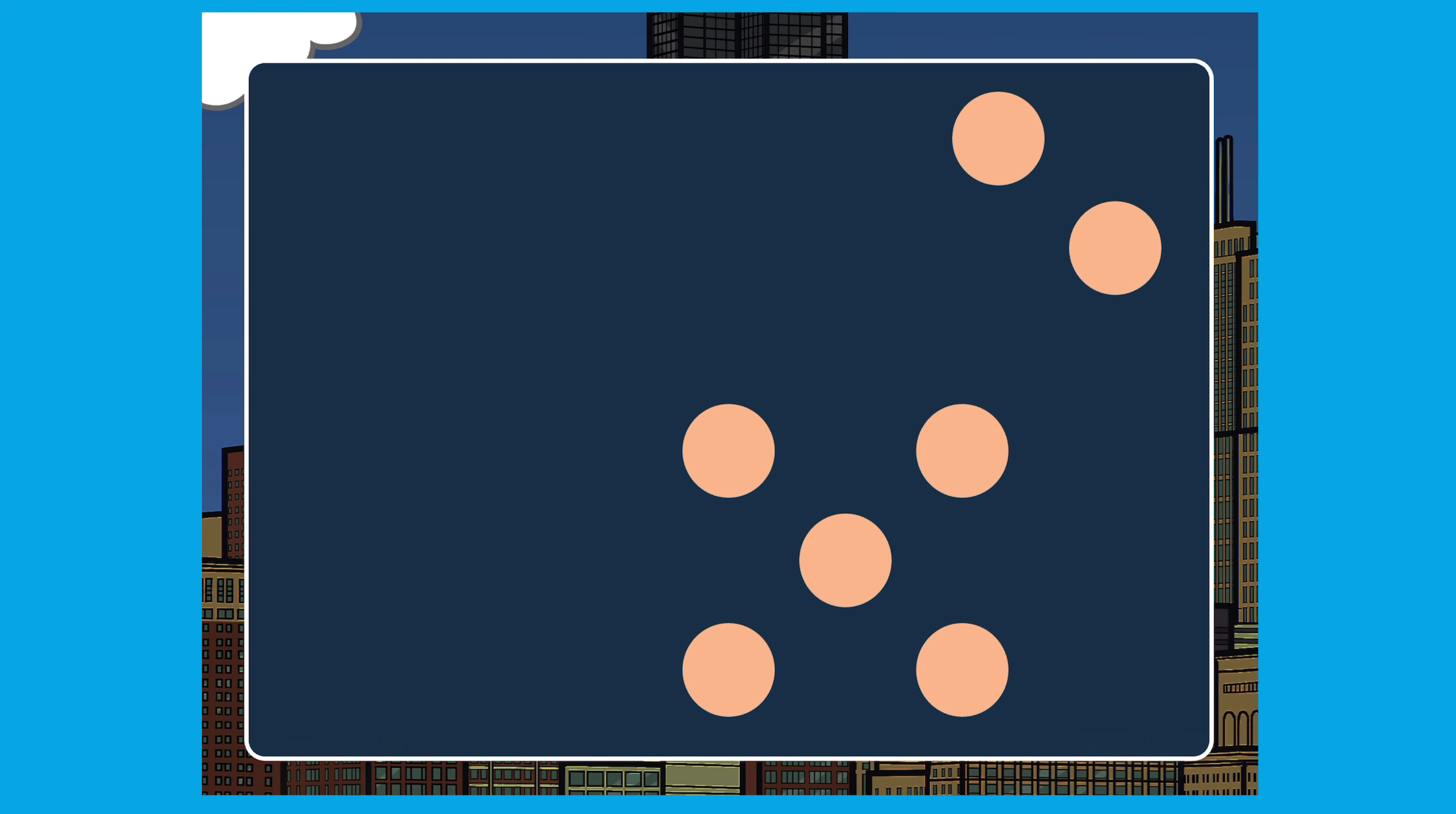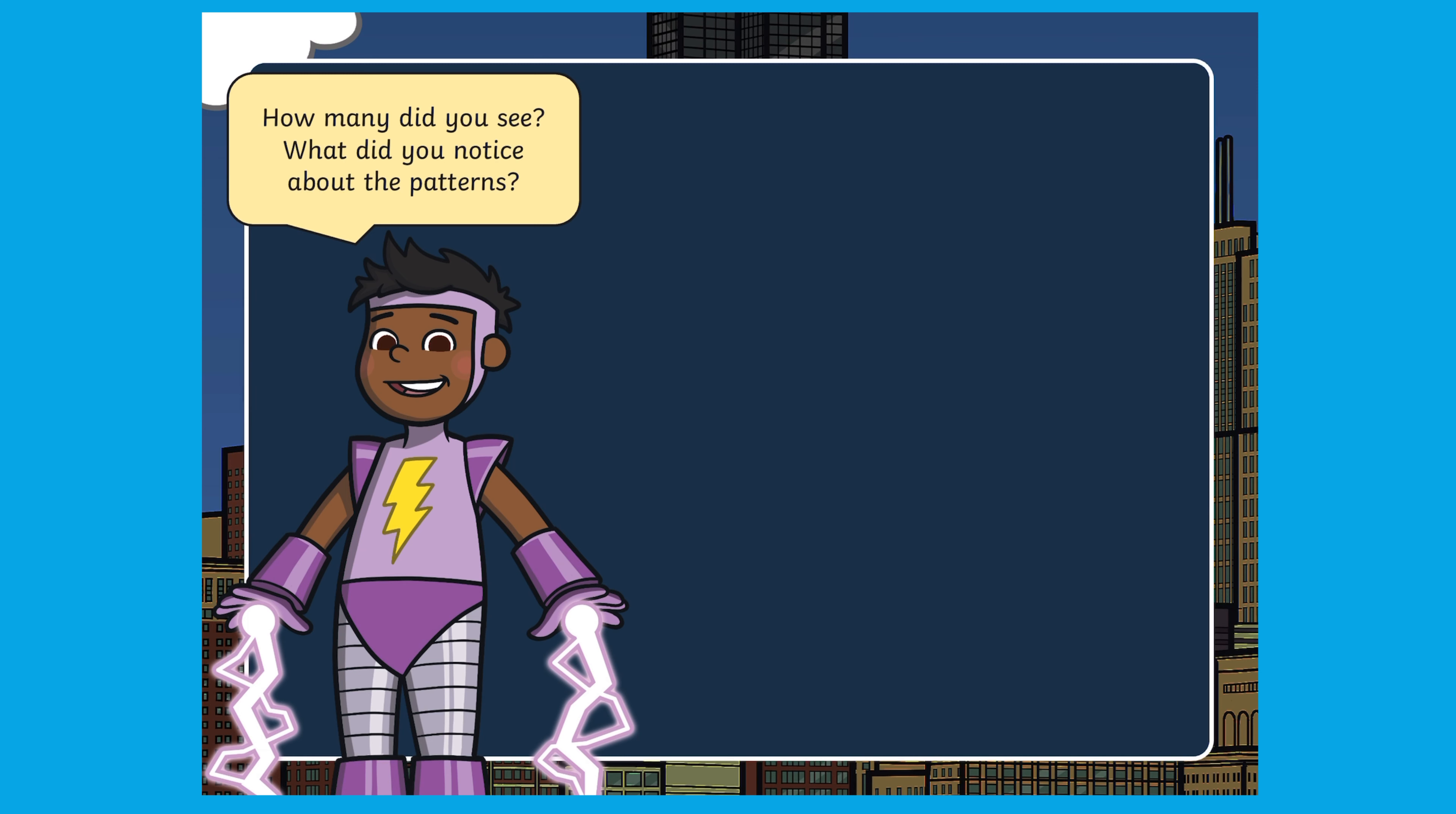Children will also be shown dots in more than one group. Here they might see this as five and two, rather than seven. But when the dots are shown again, they can count them up and find the total.